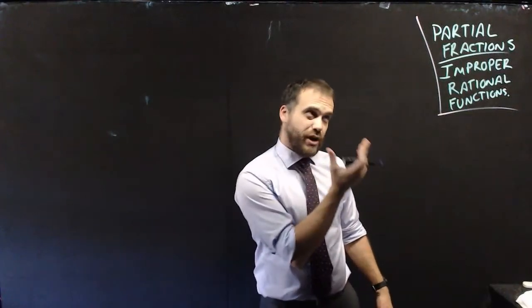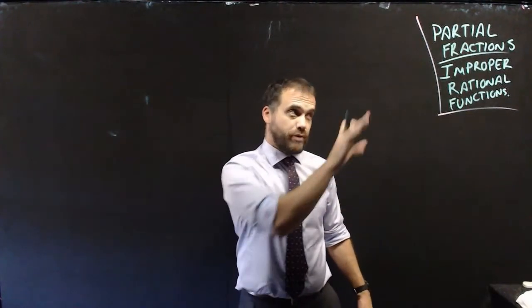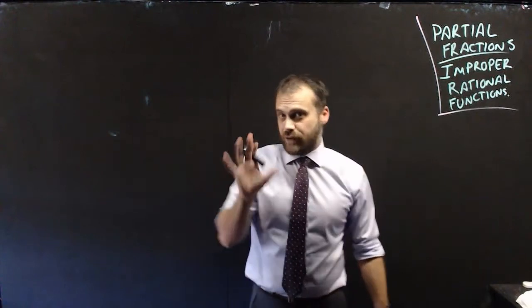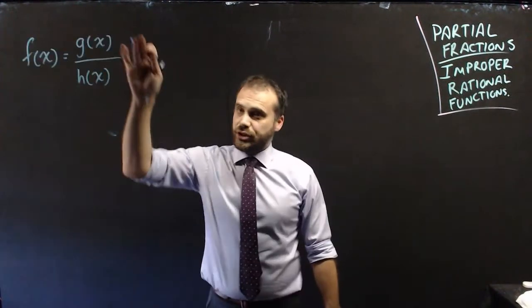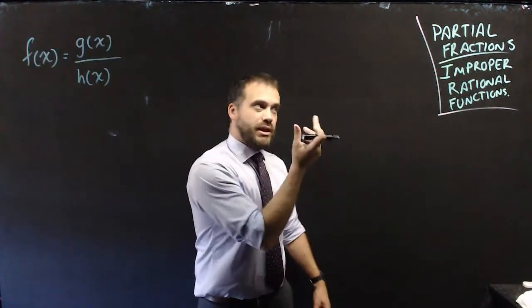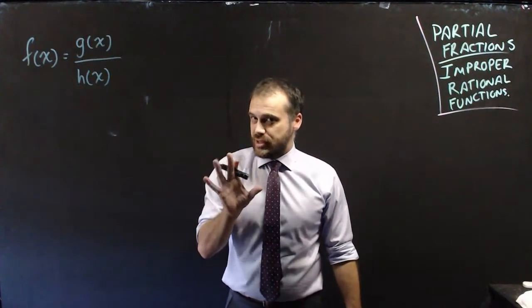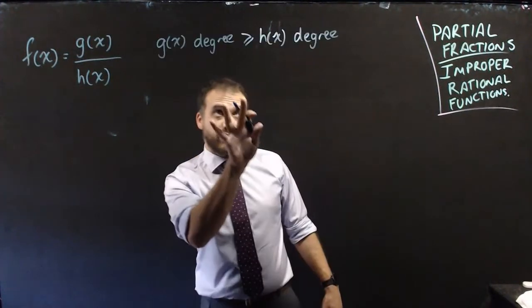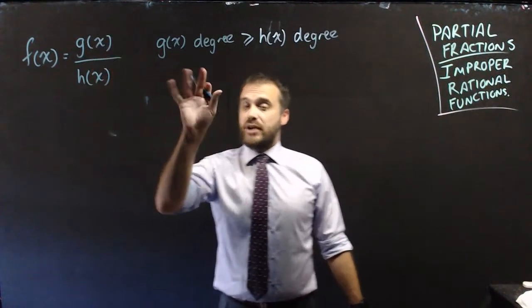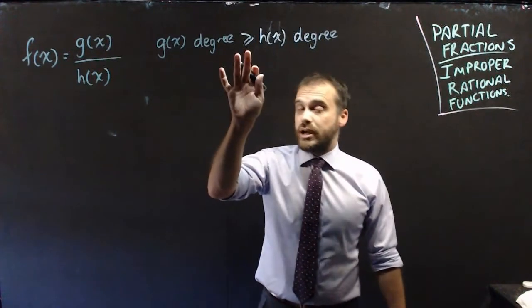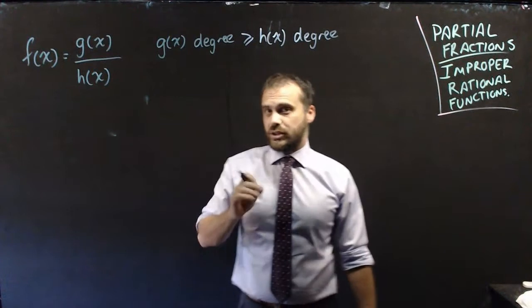This is my second video on partial fractions, this time we're looking at improper rational functions. Remember what a rational function is — it's a function over a function. An improper rational function is one where the degree of the top function is greater than or equal to the degree of the bottom function.